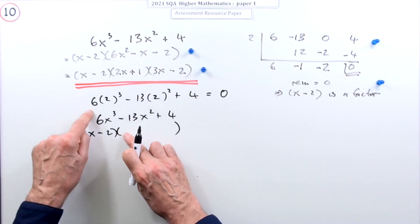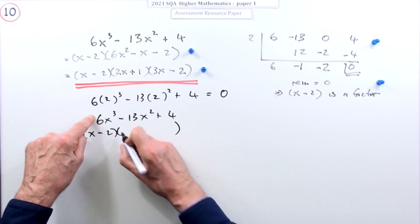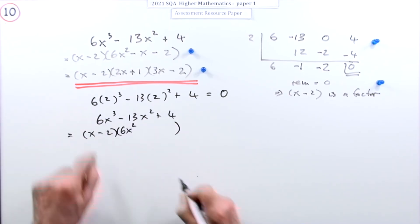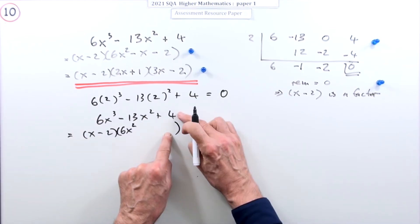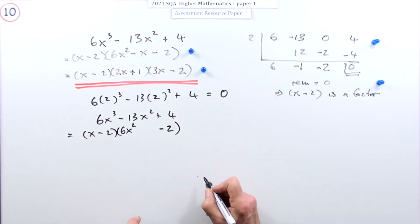How would you get it here if you didn't know about this? Well you'd have to use the fact that the first times the first gives the first, because no other term affects that. So x times what gives this? It would have to be 6x². The last times the last gives the four. Well two twos are four but a negative, it would have to be a negative.